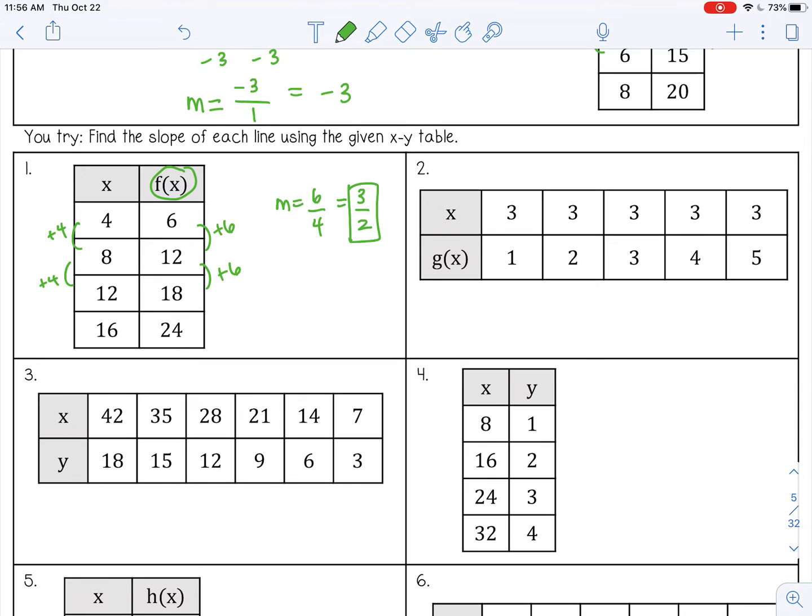All right, I'll do one more with you. So again, this is the same thing as y, g of x. That just means it's a function of x. It's my output value. So I'm adding one, adding one. Now for my x values, from three to three, I'm adding zero, adding zero. I'm not going anywhere. So the change in the y value, the output value, is one over the change in x is zero. And remember, when you divide by zero, that is undefined.